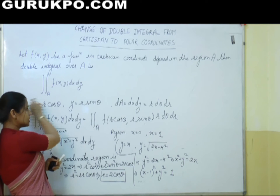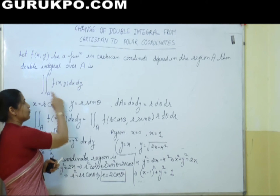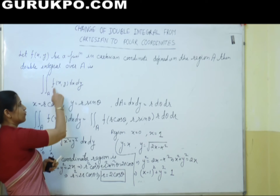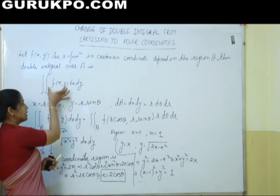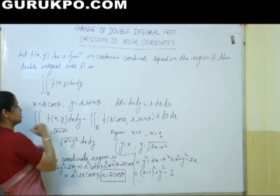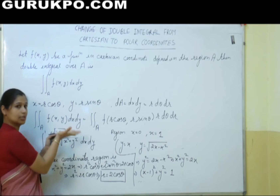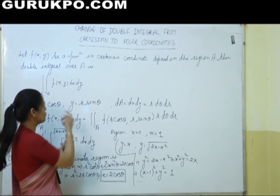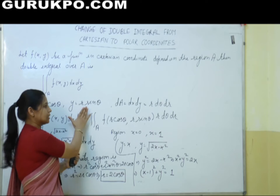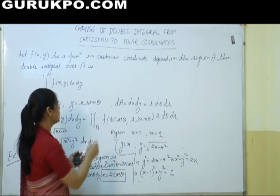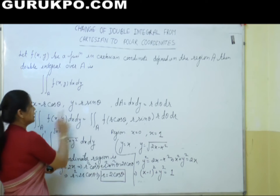How we can change it? We put x as r cosθ and y as r sinθ. When we put these values in the function f(x,y), then this function becomes expressed in terms of r and theta.